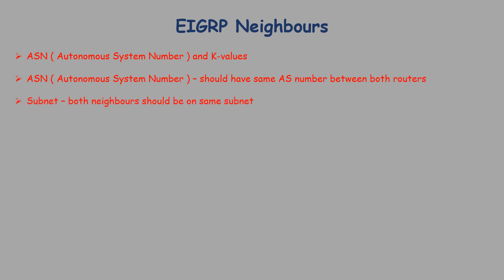Subnet: interfaces on both routers must be on the same subnet. K-Value: each router must be configured with the same K-Value used to calculate the metric. By default, only bandwidth and delay are used. If a network administrator wants to use other parameters such as load and reliability, the change must be made on both routers; otherwise, mismatched K-Values will prevent routers from becoming neighbors.